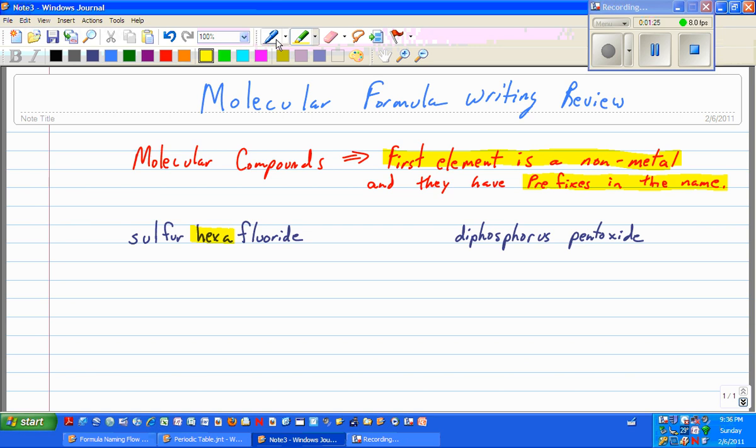So what we're going to do is simply write down the symbol for sulfur, S. We got that from the periodic table. We're going to look up the symbol for fluoride, which is F.